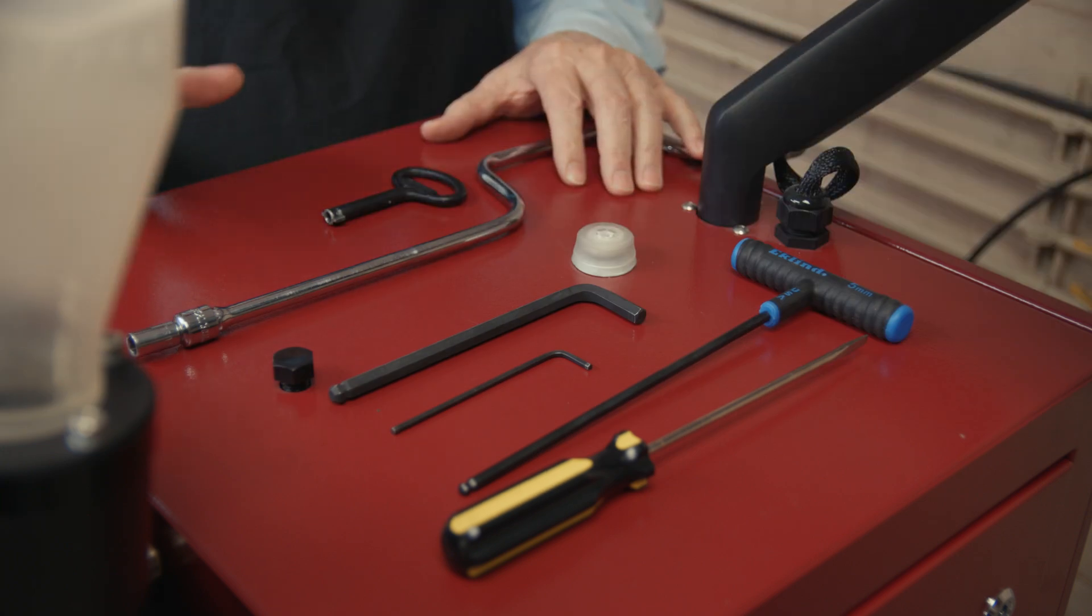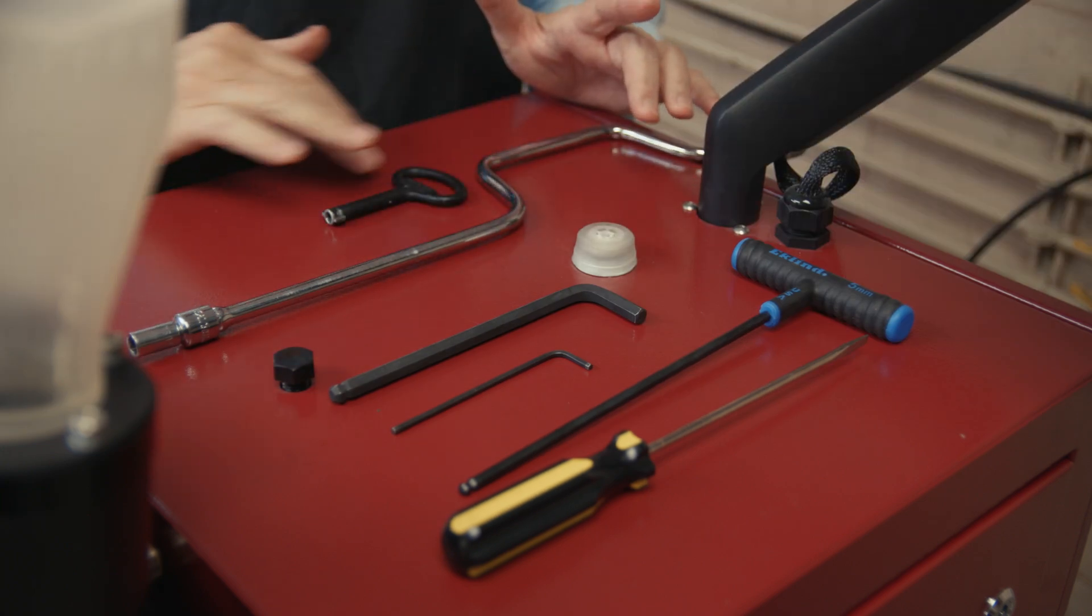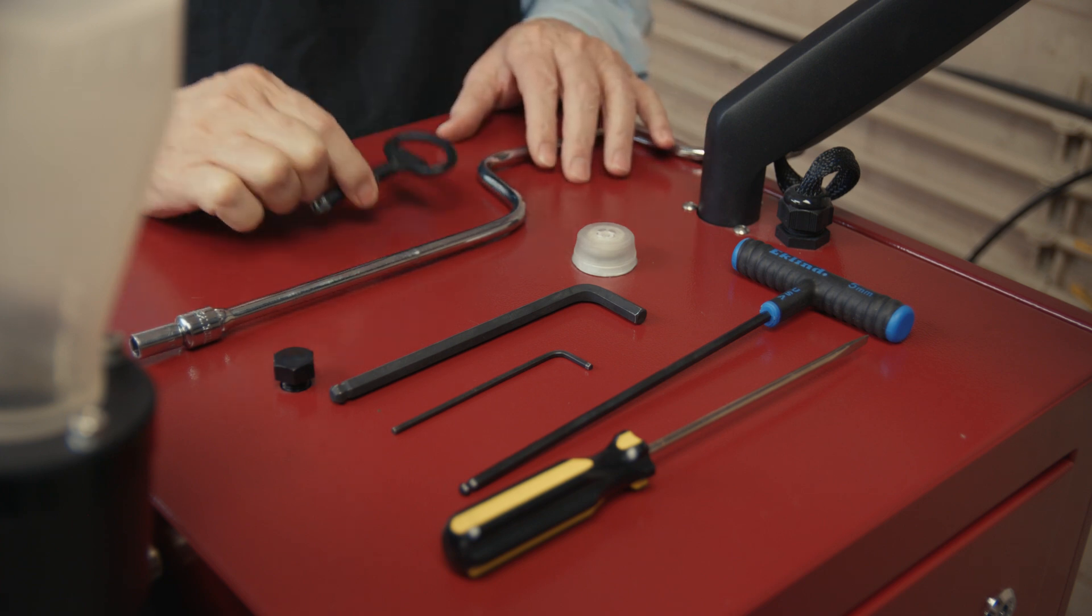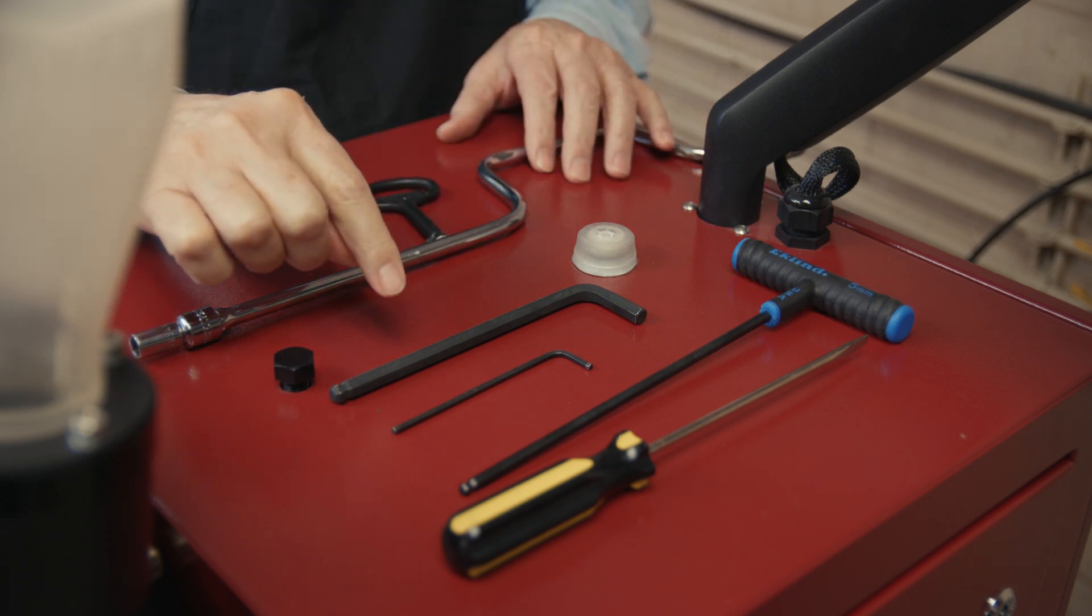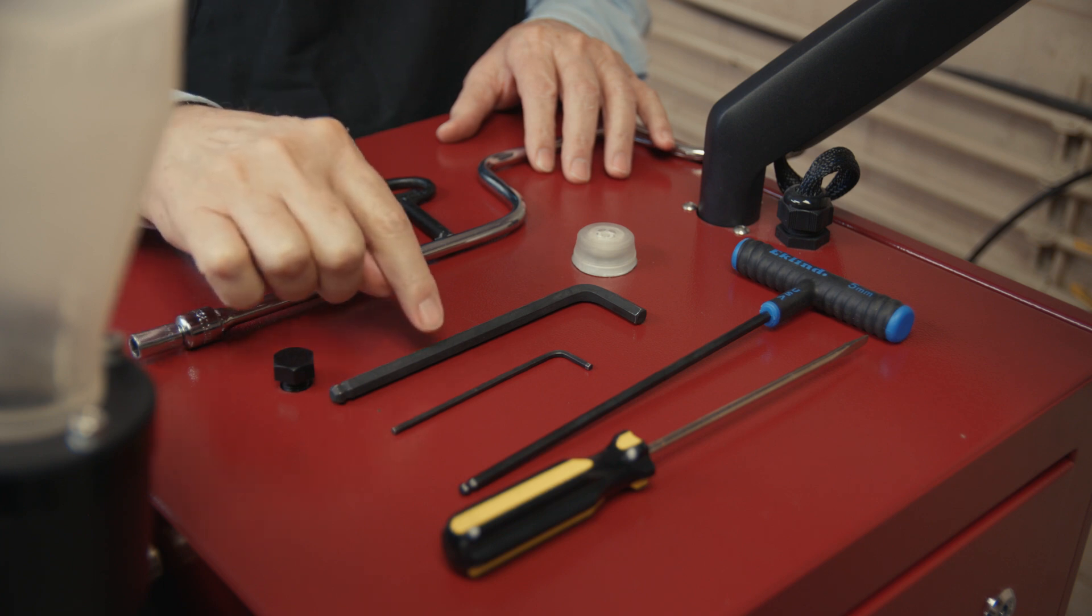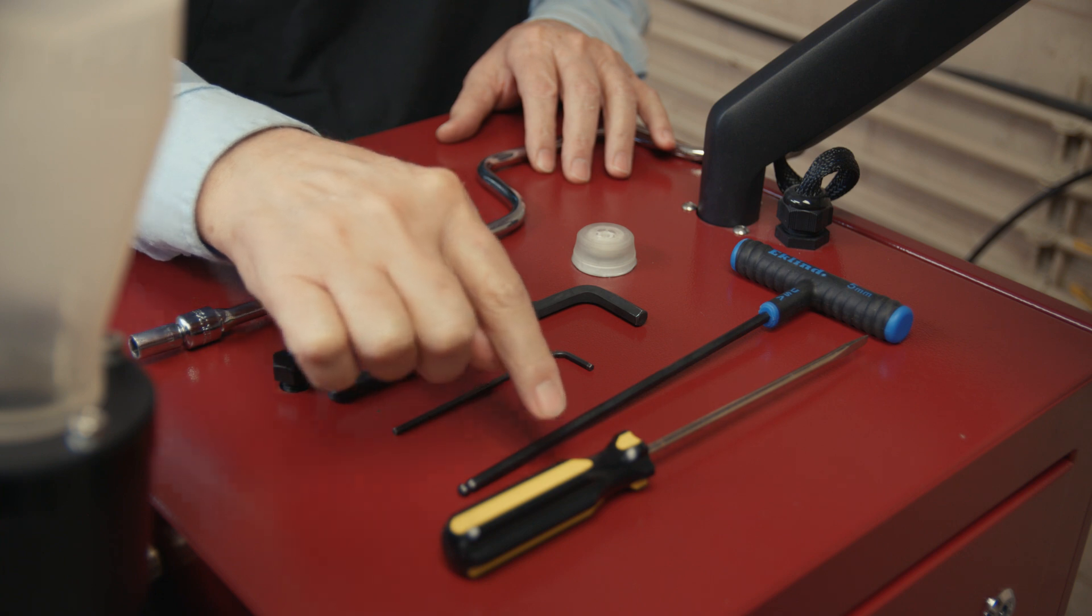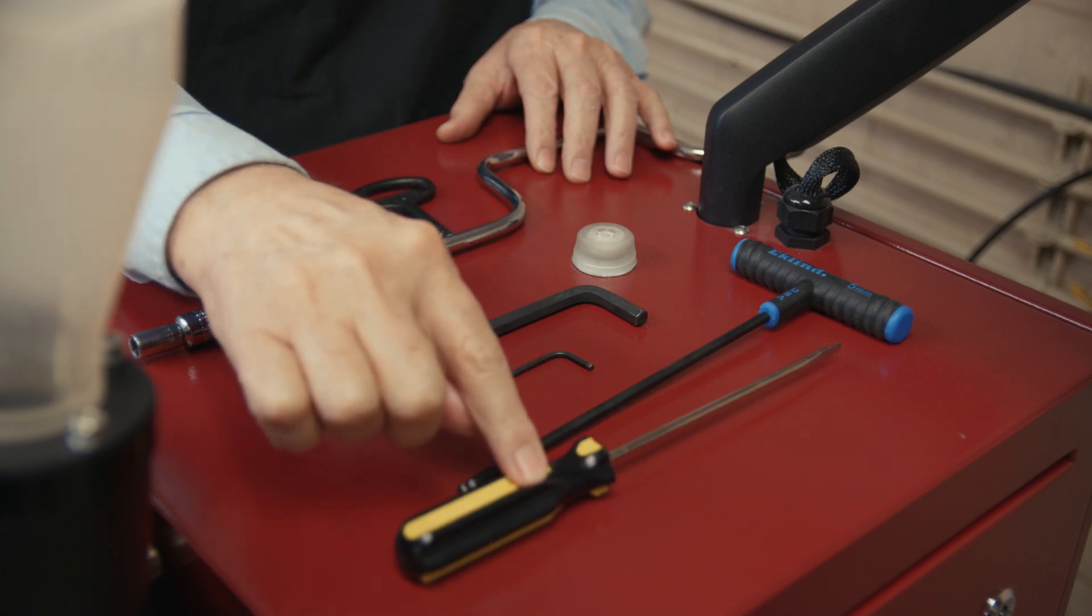Okay, so to get started, these are the tools you're going to need. These are going to come with your startup kit: a speed wrench and a panel key. Some standard tools that are not part of the startup kit are an 8mm, 3mm, 5mm hex wrench, and you might need this screwdriver.